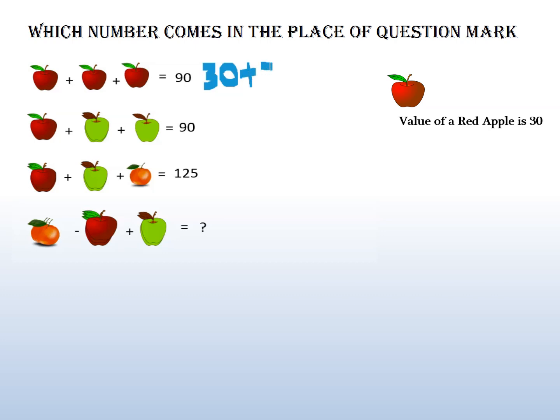And in the second line, you can see first 1 red apple. We already found that red apple value is 30, so 30 plus 3 green apples gives 90. It means 90 minus 30 is 60, so 3 green apples is 60, and 1 green apple is 20.